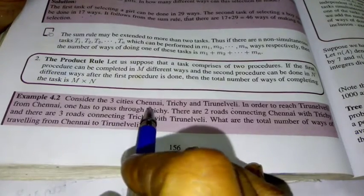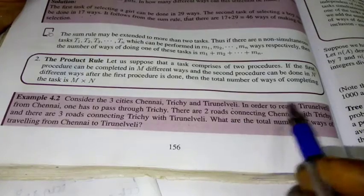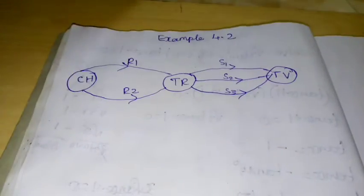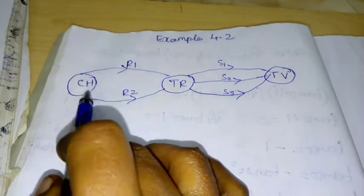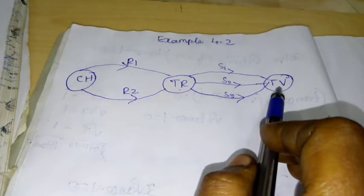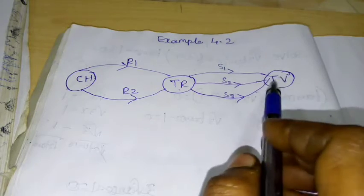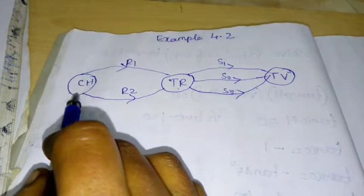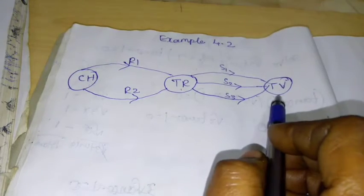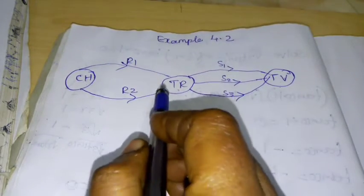So, 3 cities: Chennai, Trichy, and Tirunelveli. In order to reach Tirunelveli from Chennai, one has to pass through Trichy. There are 2 roads connecting Chennai with Trichy, and 3 roads connecting Trichy with Tirunelveli.